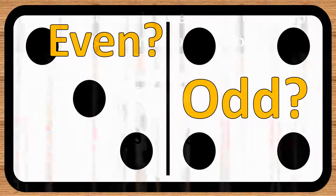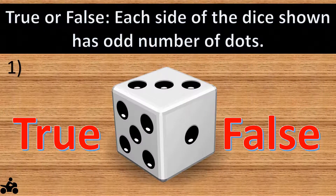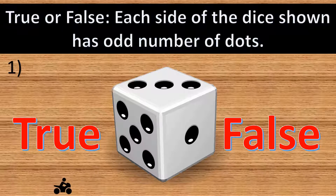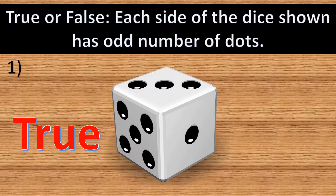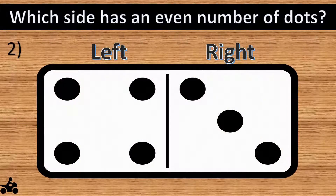Question number one: true or false, each side of the dice shown has an odd number of dots. The answer is true. Question number two: which side has an even number of dots, left or right?